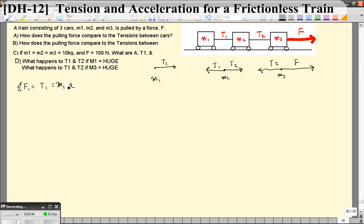And we're going to look at the second object over here. That's going to be T2 minus T1 equals M2A. And then we're going to look at the third object, which is going to be force minus T2 equals M3A.